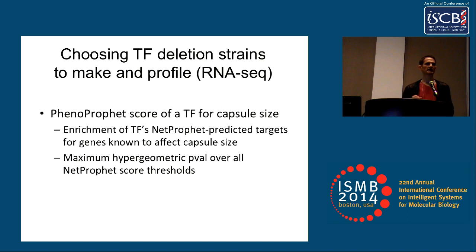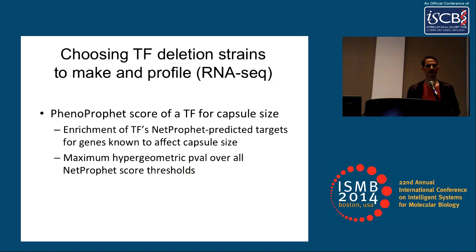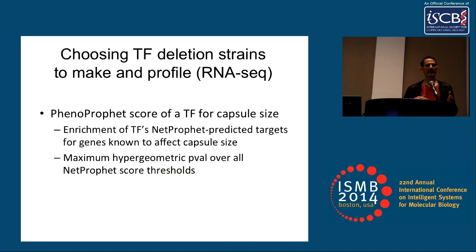One of the first challenges, since there was no existing expression data of the type we needed for Cryptococcus, was which transcription factor deletion strains to make and subject to RNA-seq expression profiling. We tried several different methods, but the one that worked best is a very simple method we call PhenoProfit. It takes the NETPROFIT-predicted targets of each transcription factor and calculates the enrichment of those targets for genes already known to be involved in capsule production, taking the maximum hypergeometric p-value over all thresholds of NETPROFIT scores. This works because even with data from deletion of only a few transcription factors, the regression component of NETPROFIT predicts targets for all transcription factors.